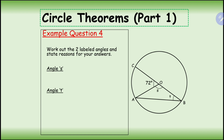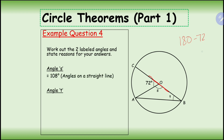Example four: work out the two labeled angles s and t and state reasons. To work out s — CB is a diameter, so it's a straight line — s equals 180 minus 72, which gives 108 degrees.